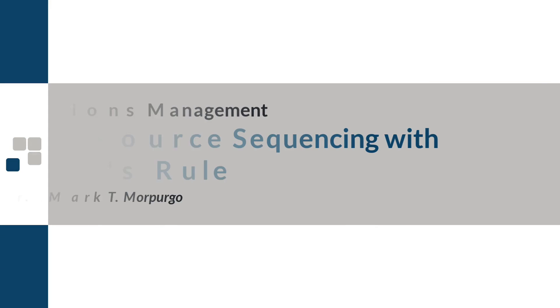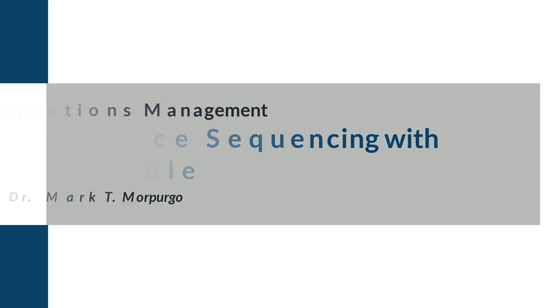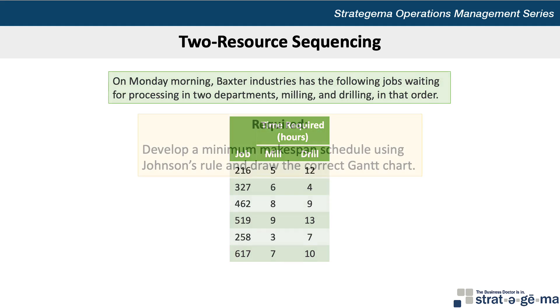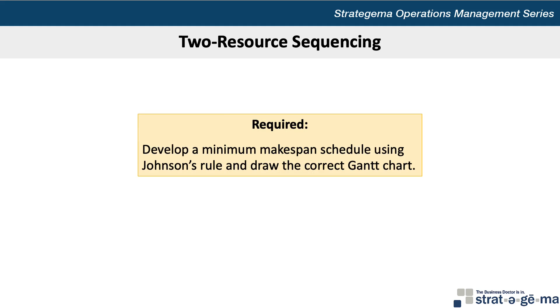This problem walkthrough video will illustrate how to apply Johnson's rule to a two-resource sequencing problem. On Monday morning, Baxter Industries has the following jobs waiting for processing in two departments, milling and drilling, in that order. Our requirement is to develop a minimum make-span schedule using Johnson's rule and to draw the correct Gantt chart.